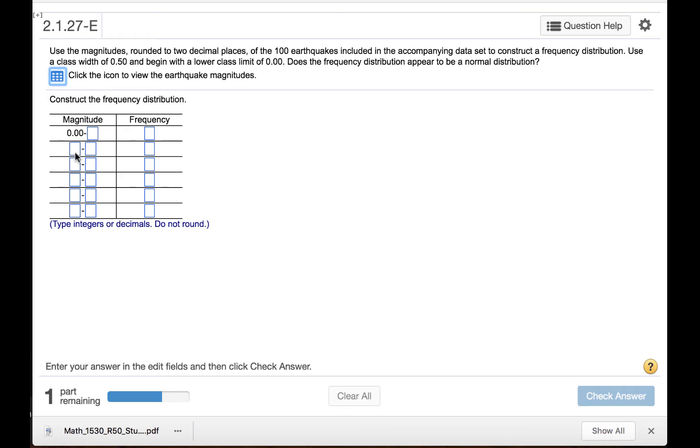We should begin by using the class width to fill out the lower class limits for each of the classes. We will do this by repeatedly adding 0.5. So 0.00 plus 0.50 will be 0.50.